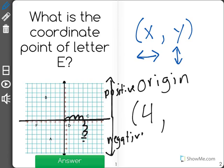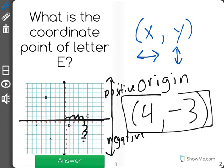So we went below, meaning that our value is 4, negative 3.